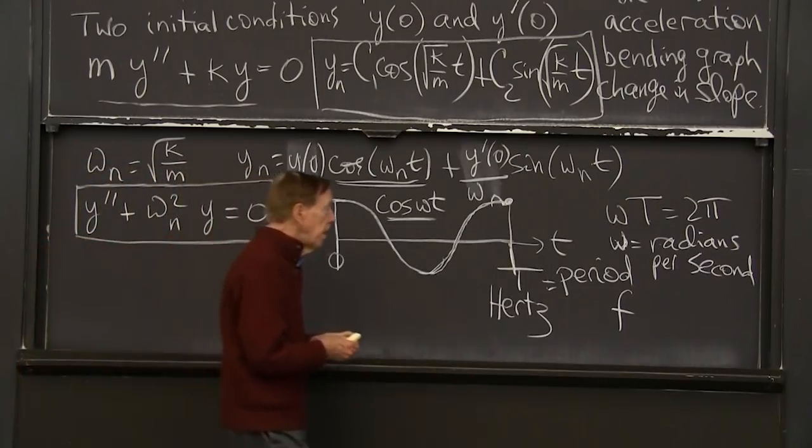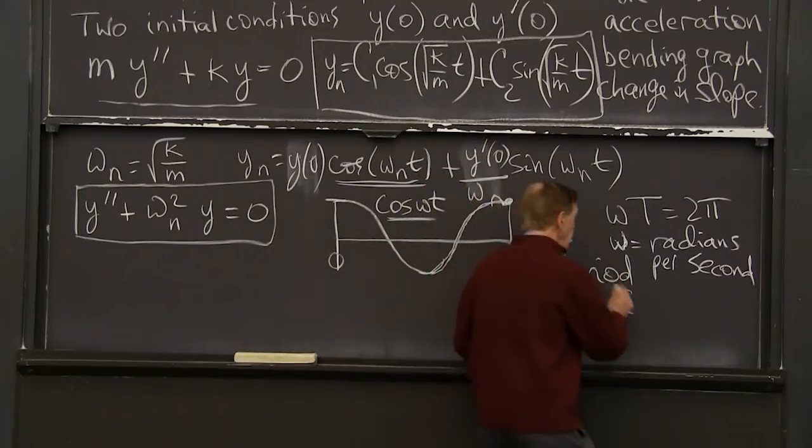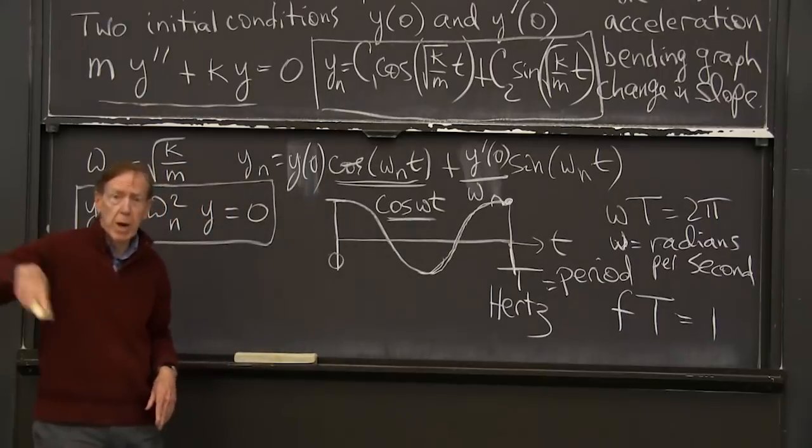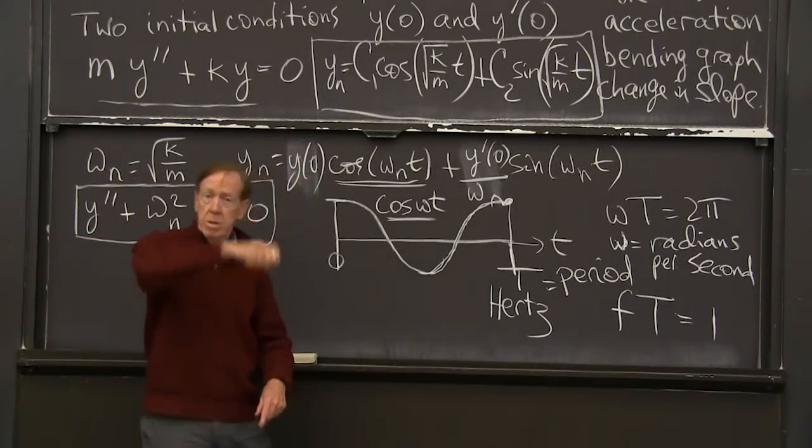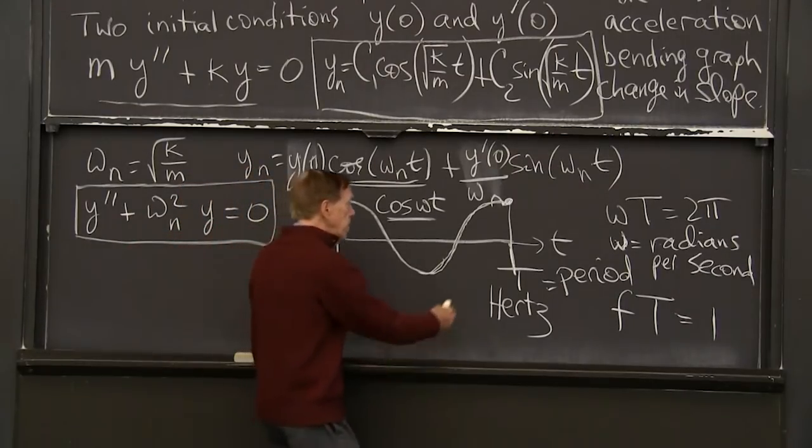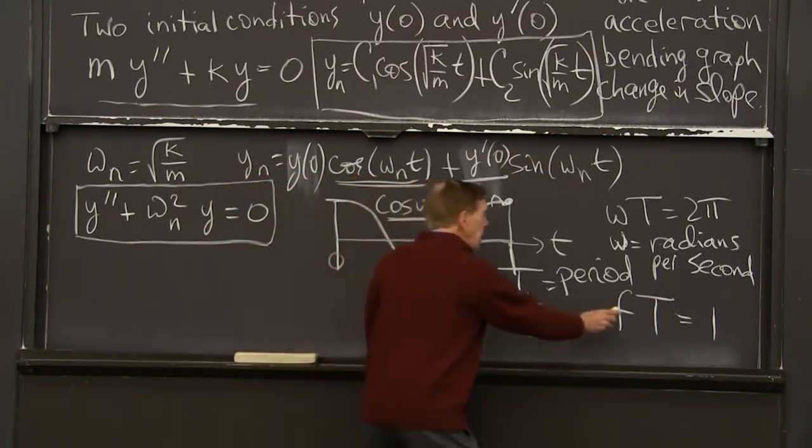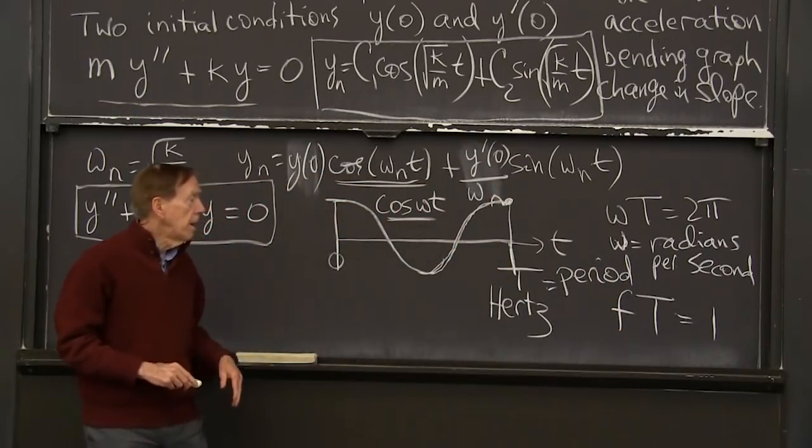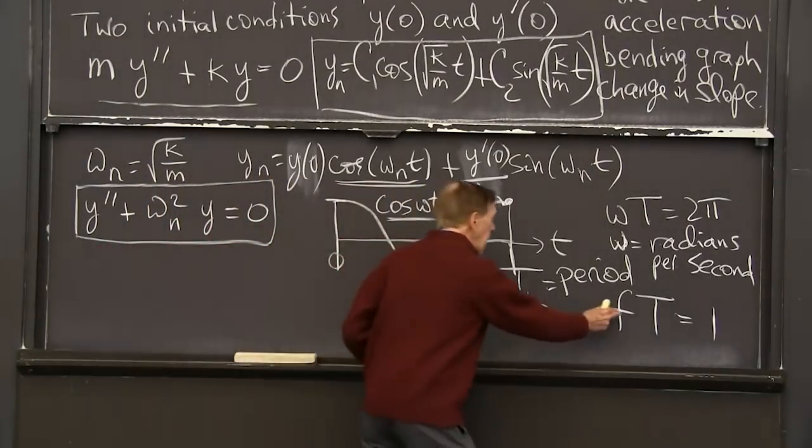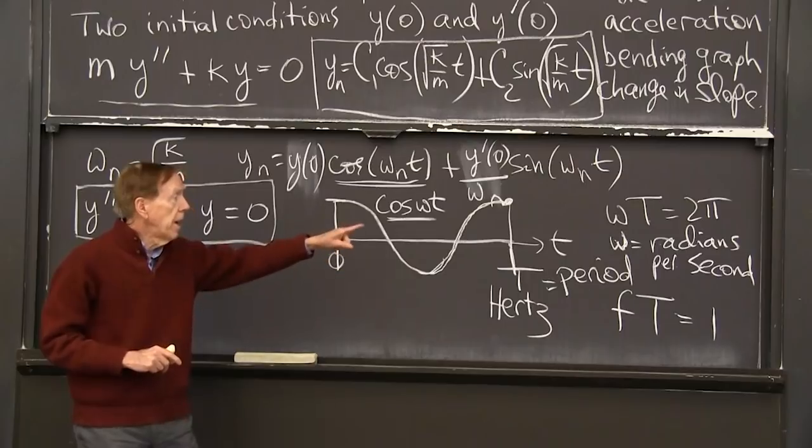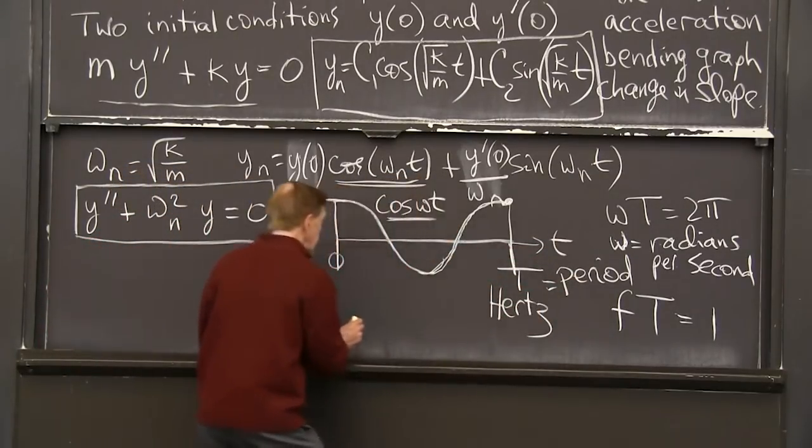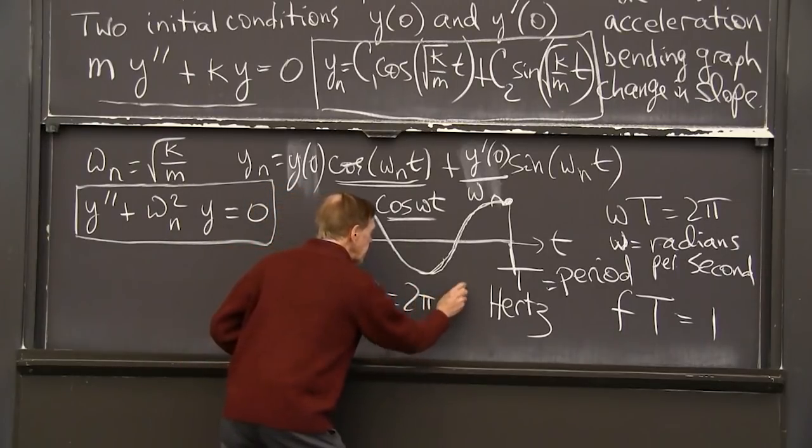So what is f? F is 1, f times t is 1. Instead of dealing with 2 pi, which counts radians, the 1 just counts complete loops, complete oscillations. So f compared to omega, f is smaller by a factor of 2 pi. So f times t is 1. f is 1 over t. Omega is 2 pi over t.